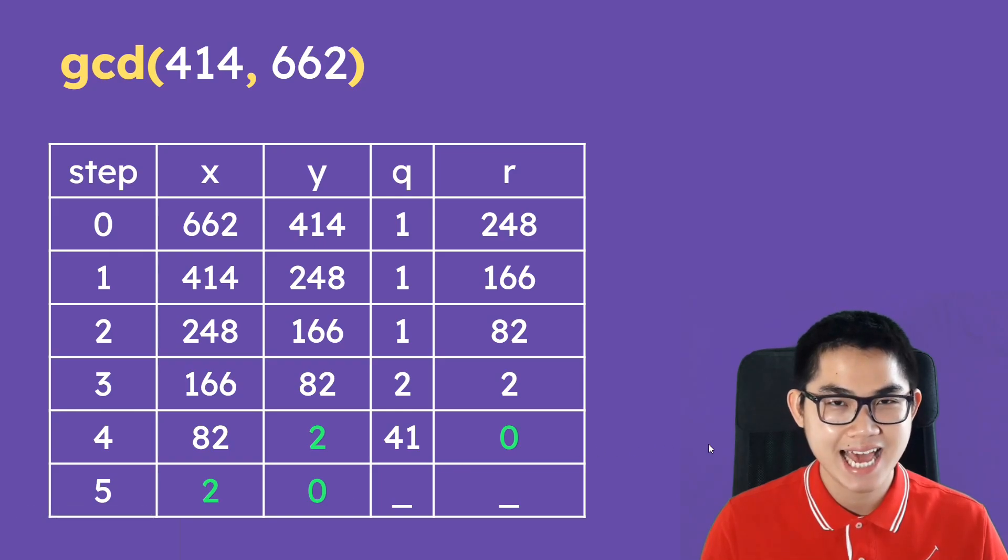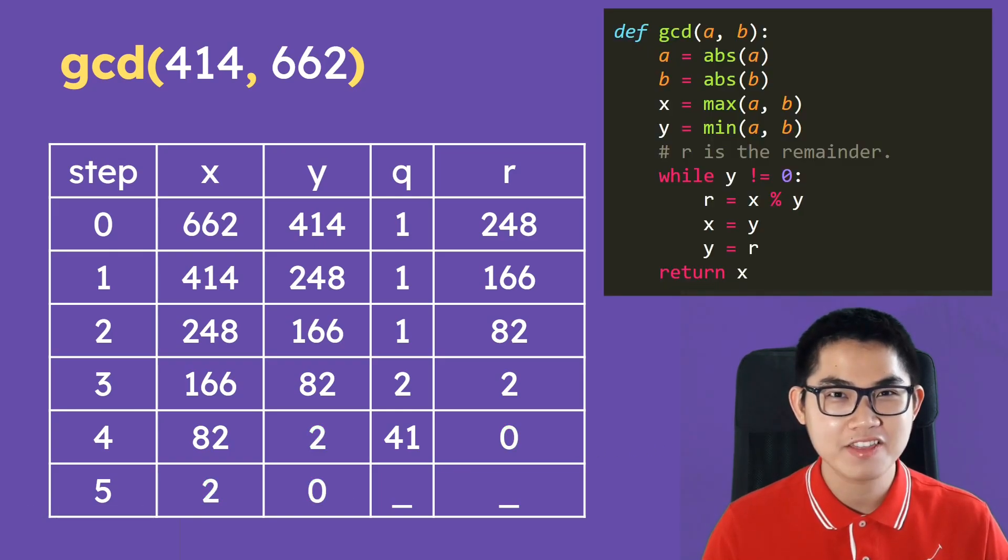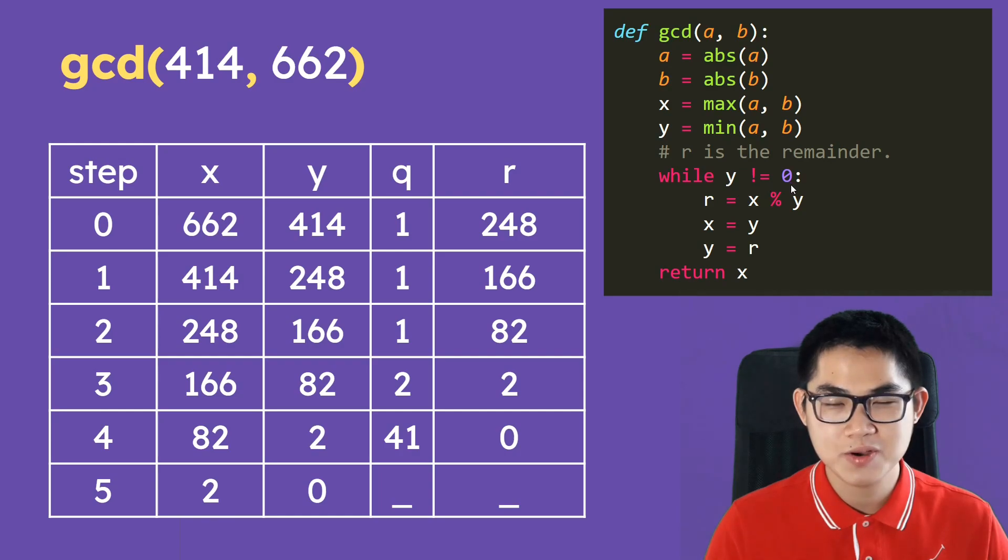Let's go over the Python code very quickly for the Euclidean algorithm. So that would be the GCD function. It takes in two numbers, a and b. The first step is to make sure that both of these are positive, so you can use the absolute value function to make the number positive. And then x will be the largest number out of these two, and y will be the smaller number. So while y is not equal to zero, so we're going to repeat this process until we get y is equal to zero. So this is when we stop.